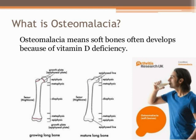Osteomalacia means soft bone, often developing because of vitamin D deficiency. It is a bone disorder where the softening of bone is the main condition. If children are affected by this problem, that condition is called rickets. If an adult is affected by the same problem, that condition is called osteomalacia. The underlying problem is the same in both rickets and osteomalacia.